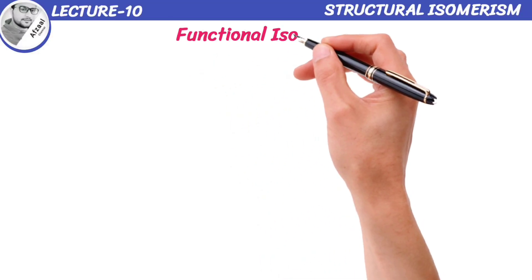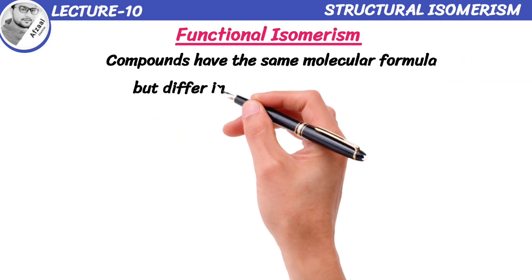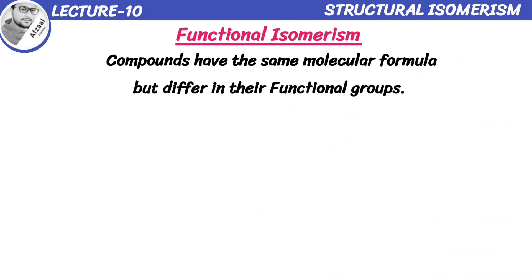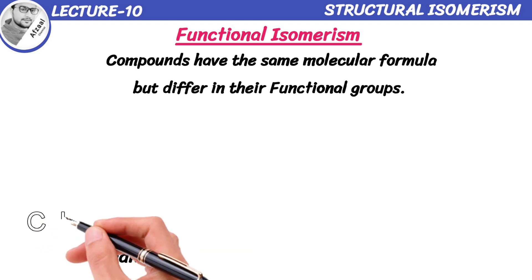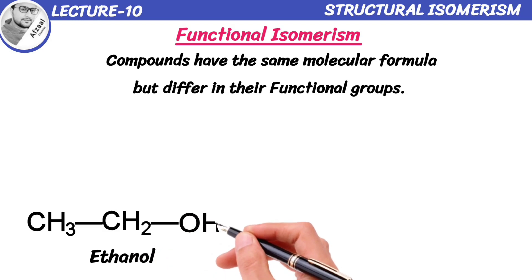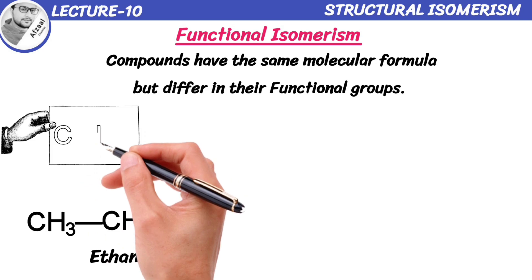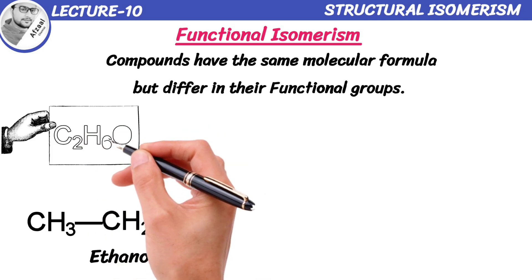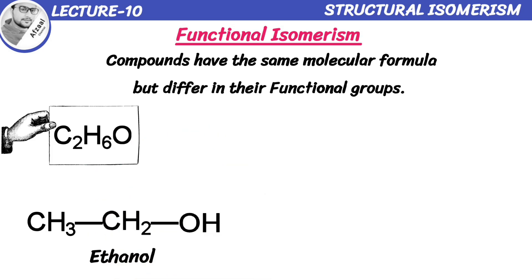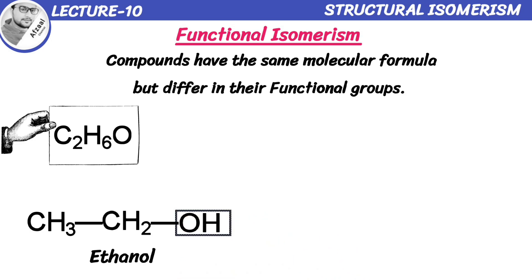Functional isomerism occurs when compounds have the same molecular formula but differ in their functional groups. Let's take a closer look at ethanol and dimethyl ether as examples. Ethanol is commonly known as alcohol and is used in various beverages. It consists of 2 carbon atoms, 6 hydrogen atoms, and 1 oxygen atom. What makes ethanol interesting is its functional group — that is, a hydroxyl group.